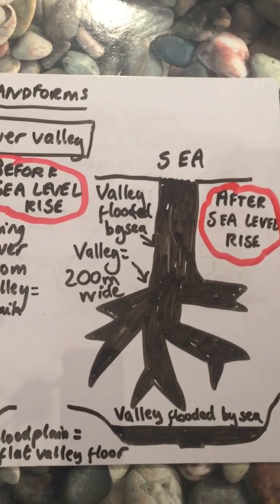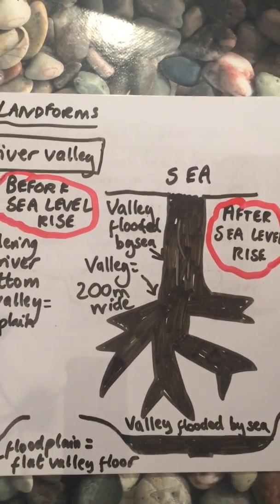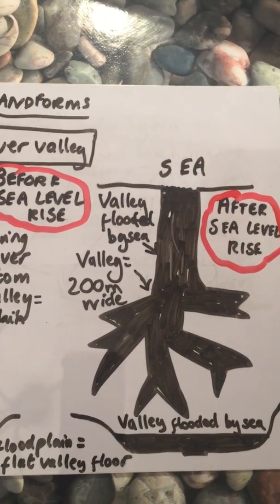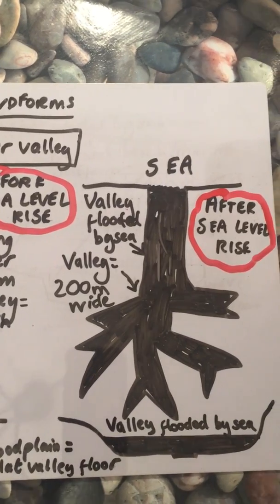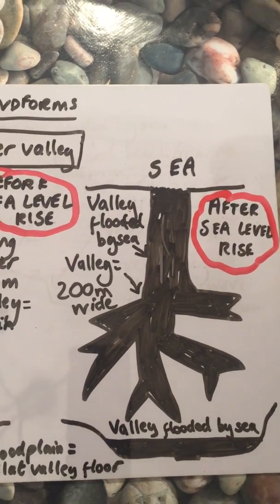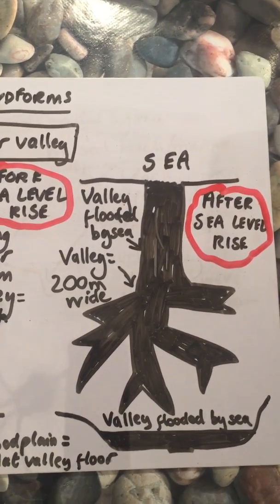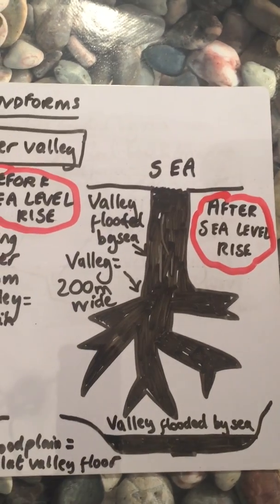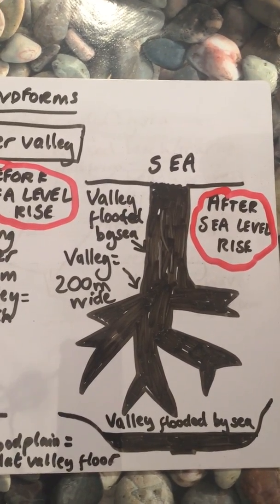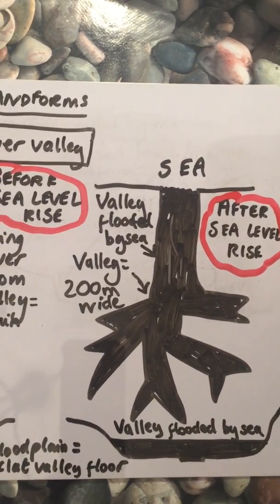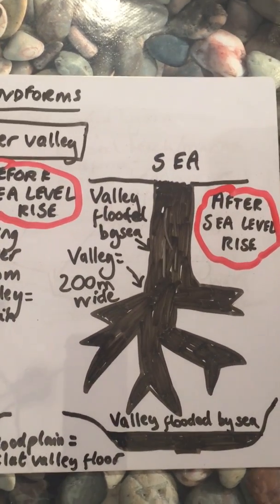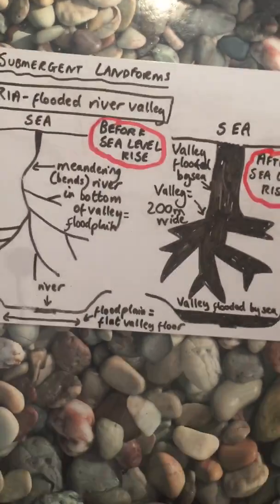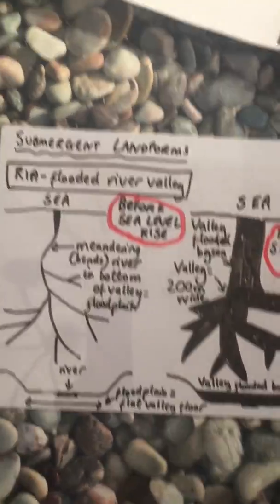So those are submergent landforms, and if I asked you: is that eustatic rise or isostatic rise? I'm hoping you would say — yeah, you got it — eustatic rise, of course. Let me just give you the two diagrams together like that.